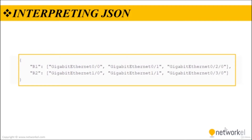For example, without knowing anything about JSON syntax, you could probably determine from your prior knowledge of Cisco routers and switches that the JSON on the screen lists two devices, maybe their host names, and a list of interfaces on each device. You can see we have R1 — most probably that's the host name — R2, also a host name, and the interfaces of router 1 and the interfaces of router 2.